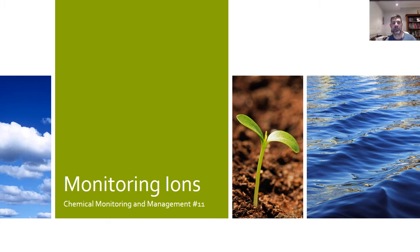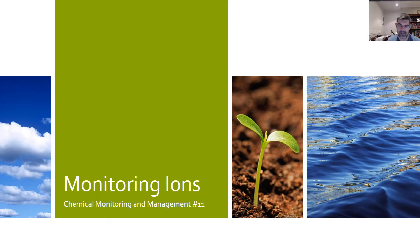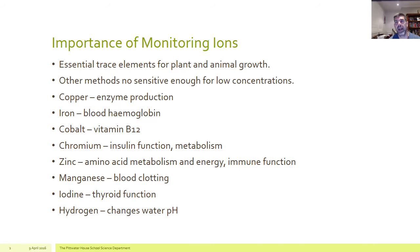Hi guys and welcome to yet another video in the HSC chemistry series. This is Chemical Monitoring and Management video number 11 — it's really the wrap-up of the third section, in which we have a chat about monitoring ions. We've looked at the way we identify different ions in solution, cations and anions, whether through precipitation reactions or flame tests, either at a qualitative or quantitative level, depending on the level of each of those ions.